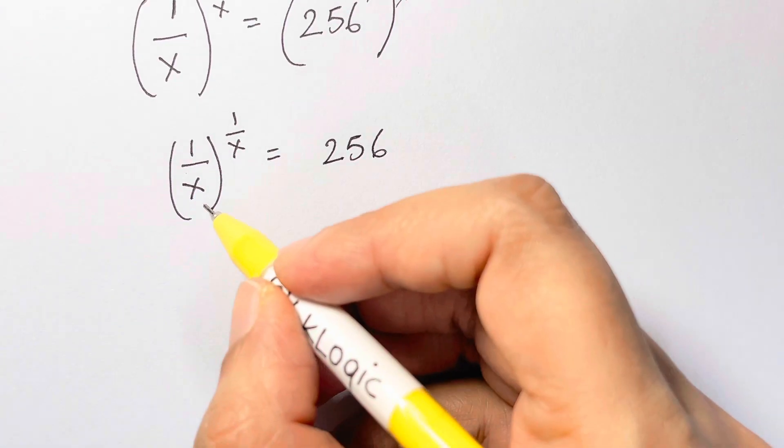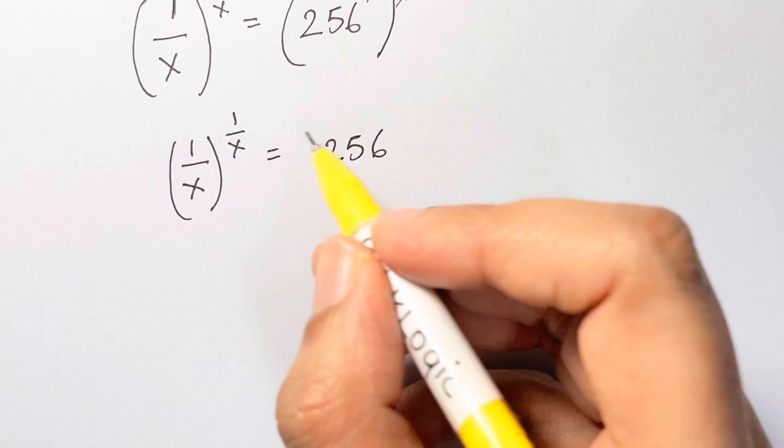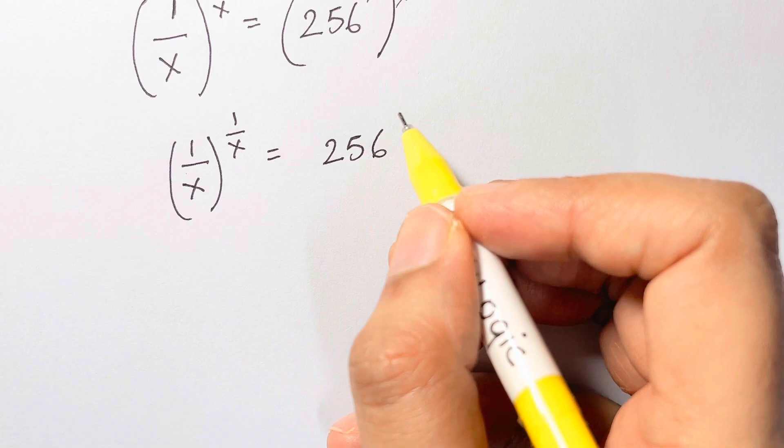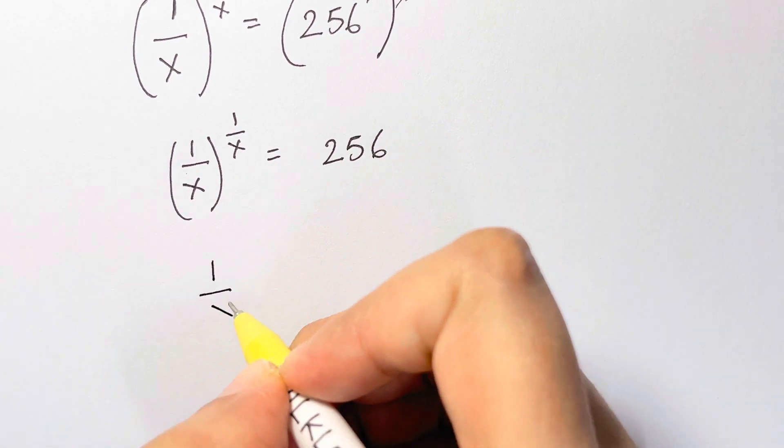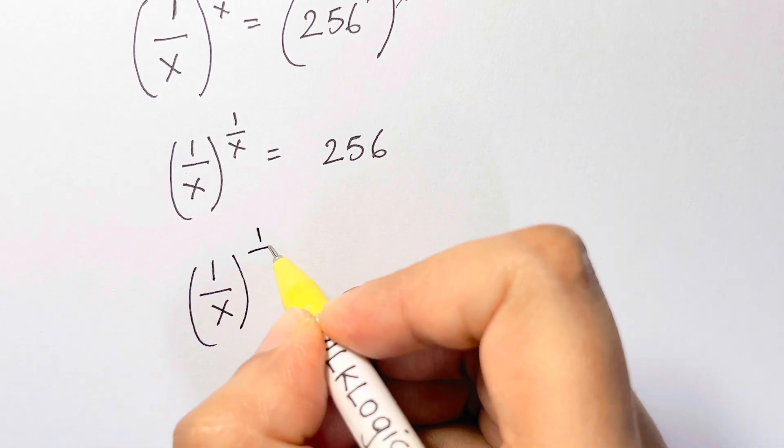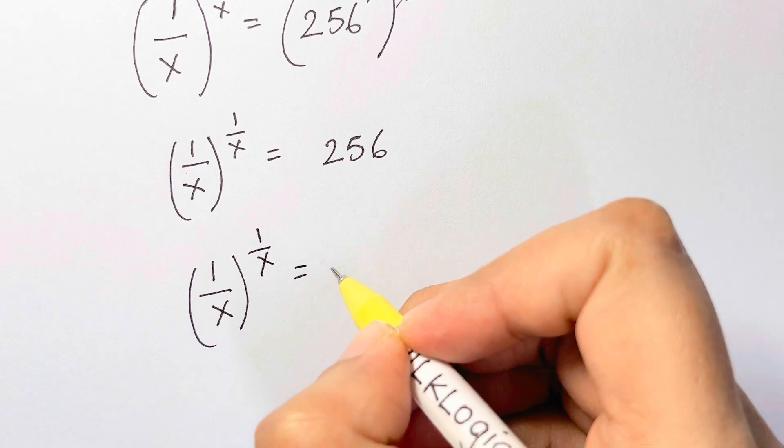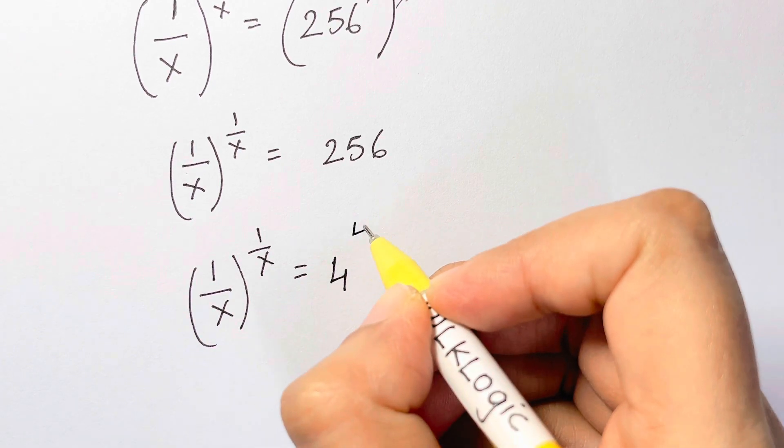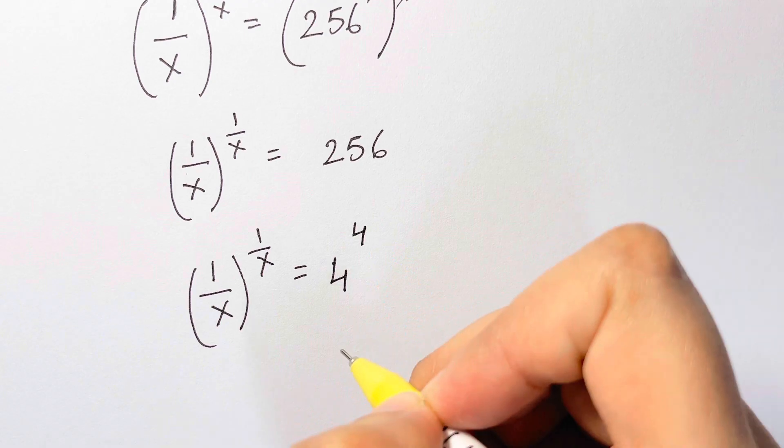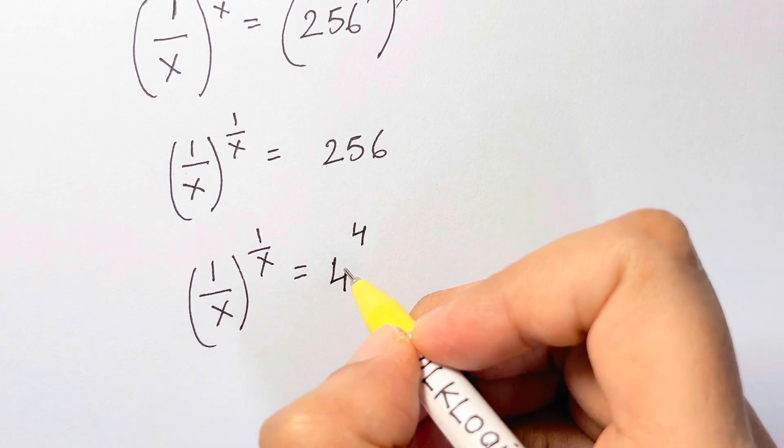Now from the left-hand side, what you can see: you have same base, same exponent. Can we convert the right-hand side also in the same way? Let's see. 1 over x to the power of 1 over x is equal to 256 can be written as 4 to the power of 4, same base with same exponent.